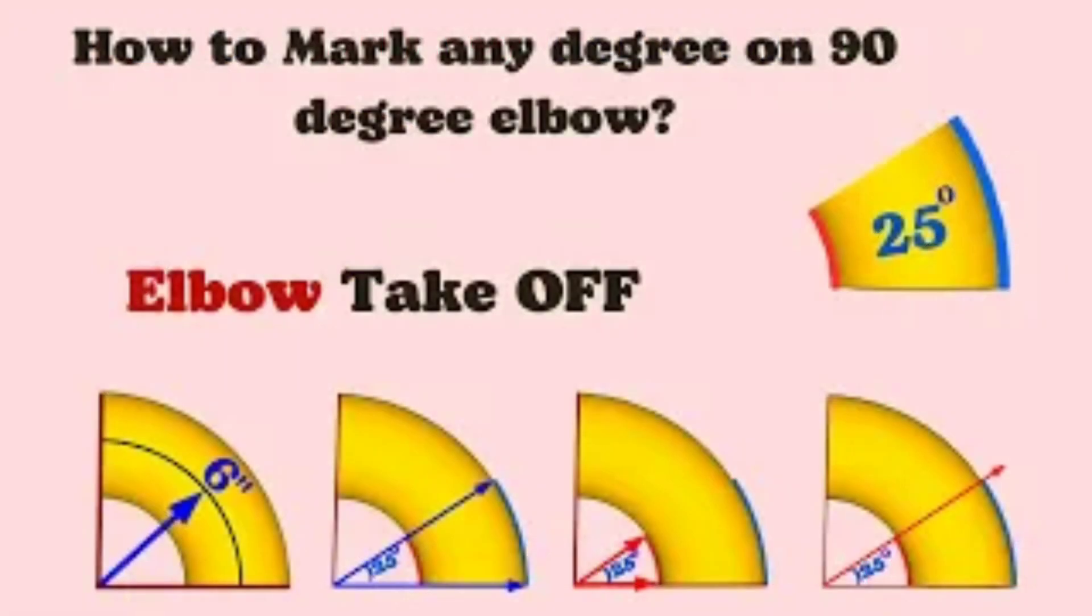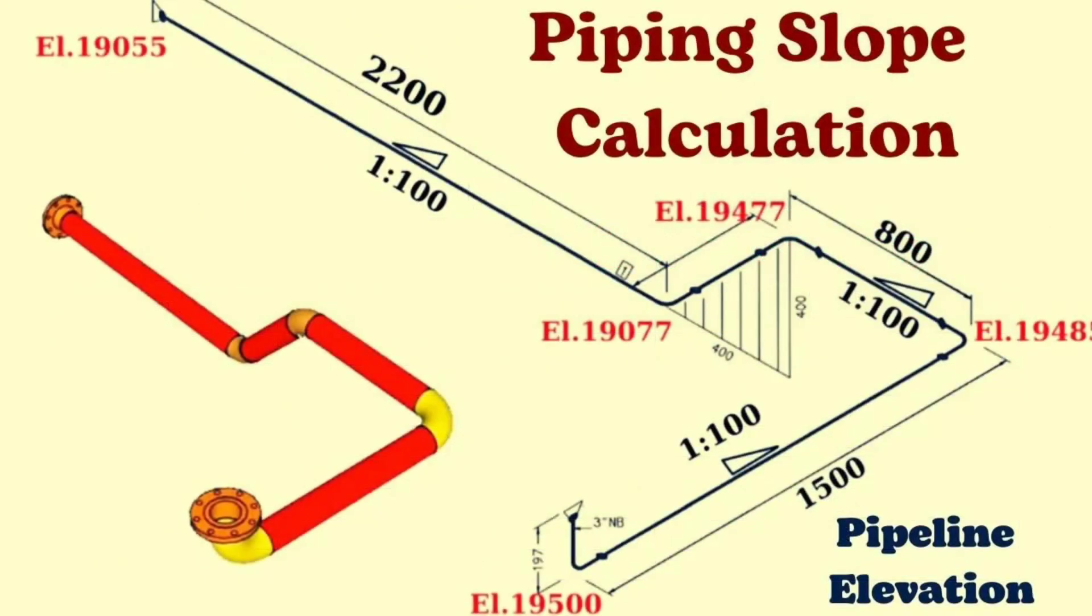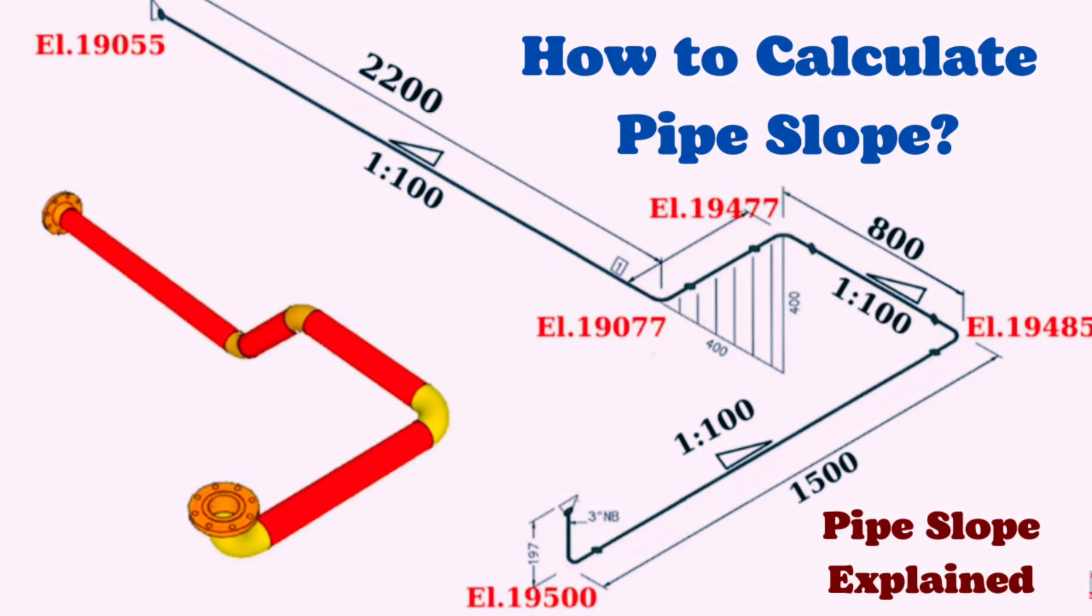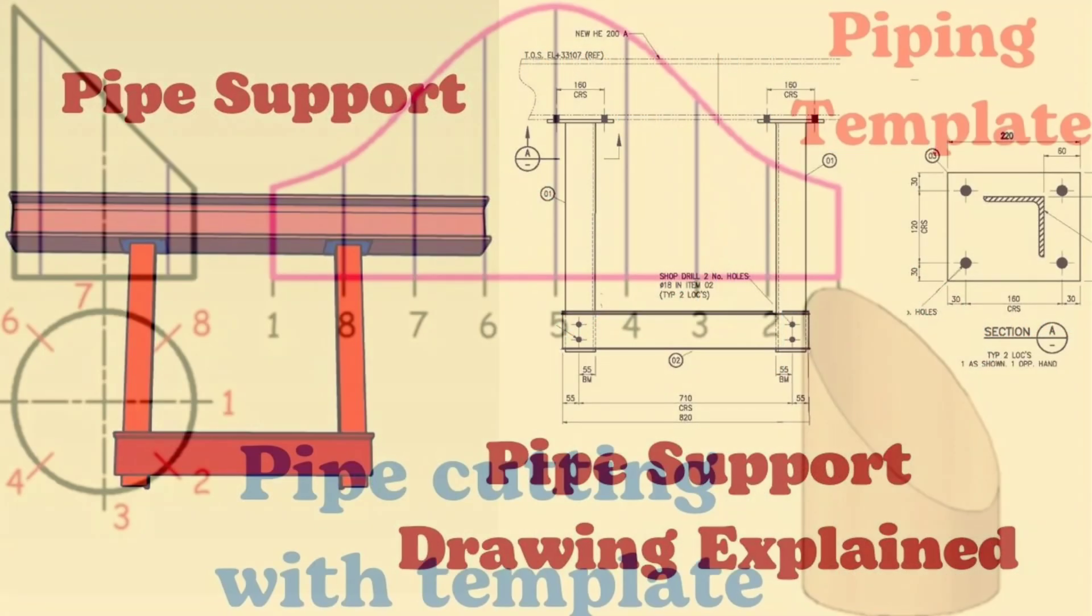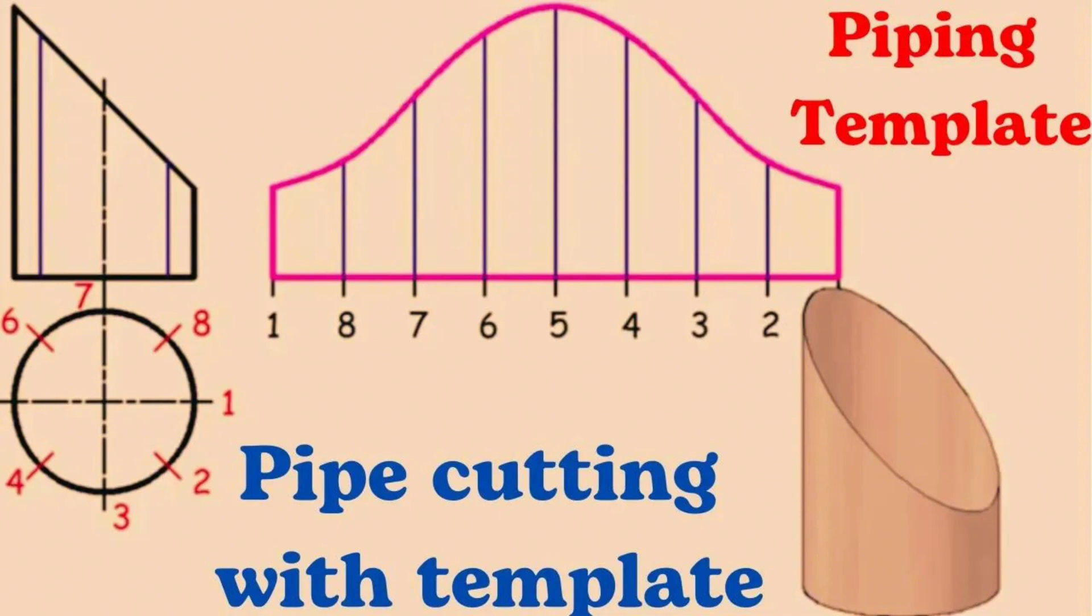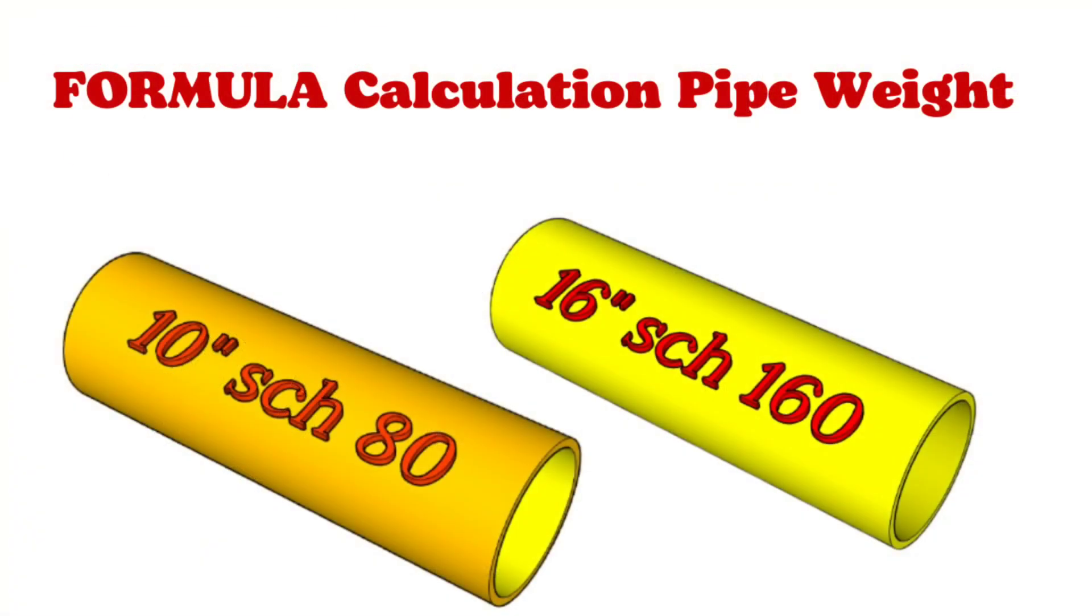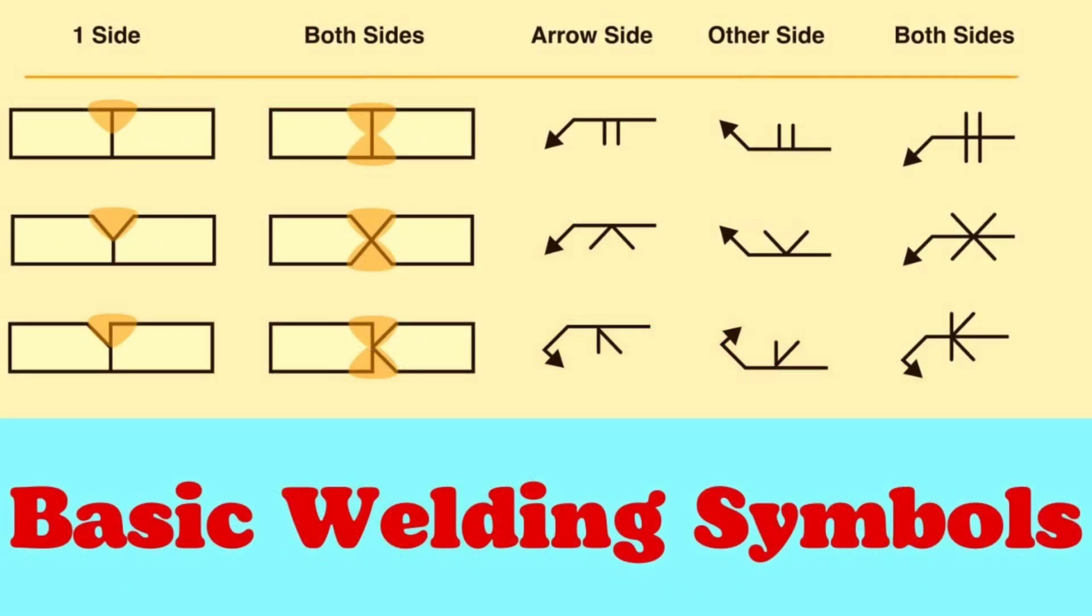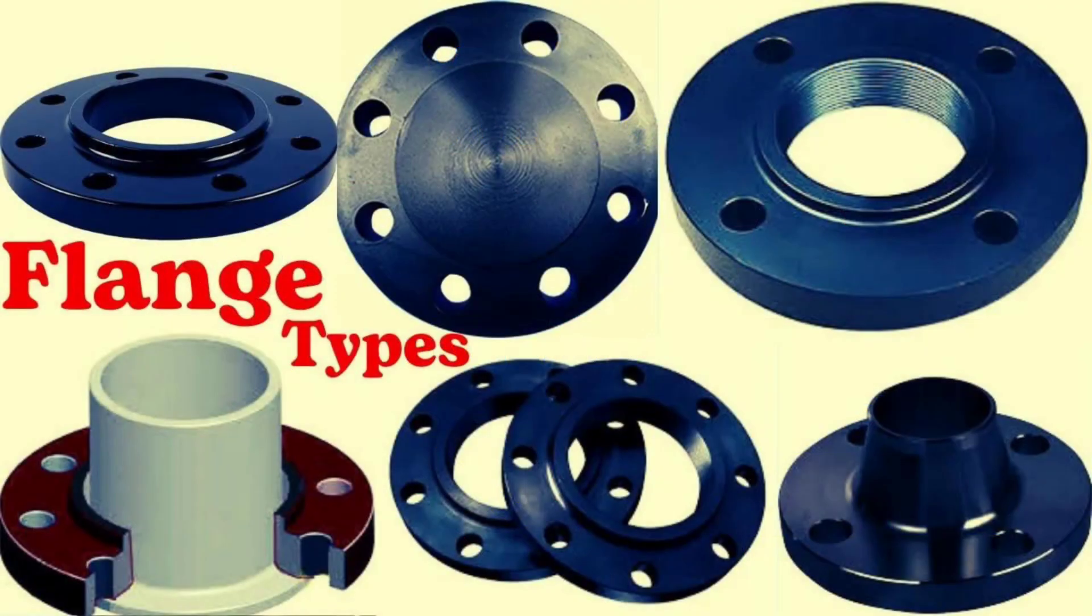How to mark and cut any degree elbow from the 90-degree elbow. 90-degree elbow dimension. Pipe slope calculation. How to calculate pipe slope in the piping isometric drawing. Pipe support drawing explained. Piping template, piping isometric symbols, pipe fitting symbols. Formula calculation, pipe weight. Basic welding symbols. How to read basic welding symbols. Flange types and dimensions.